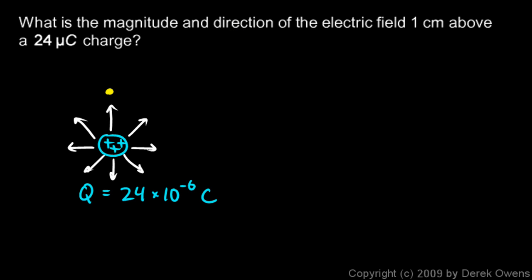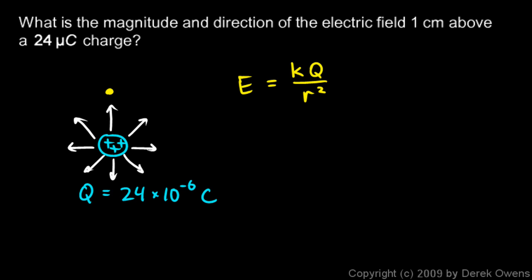So we know the direction just based on the fact that the charge is positive, and we're told we want to find the field at a point one centimeter above the charge. So the distance between these two points is one centimeter, and that's going to be r in this equation. E, the electric field intensity, is kq over r squared. k is the electrostatic constant. Q is the big charge producing this electric field. r is the distance away — one centimeter in this case — and E is the electric field intensity at that distance.